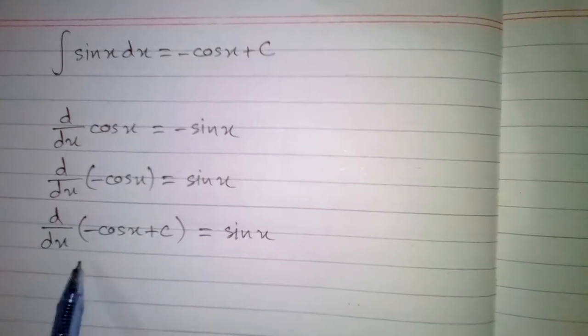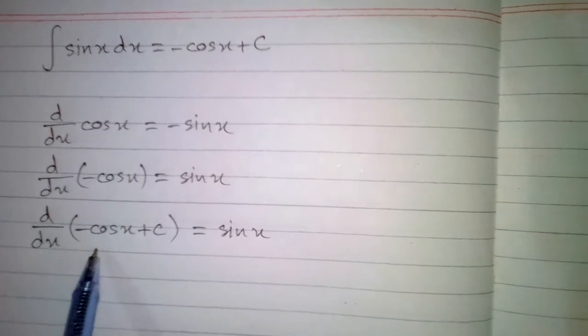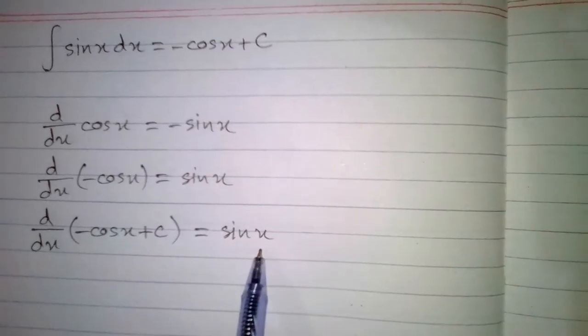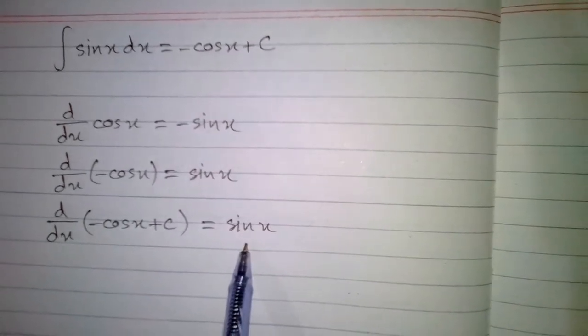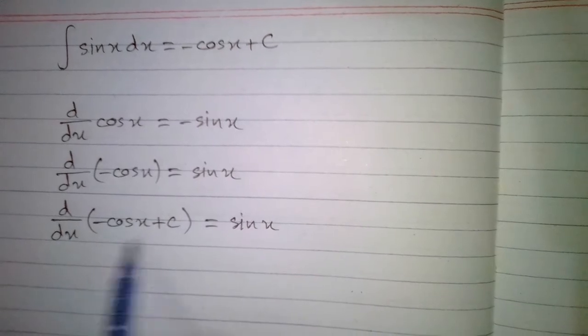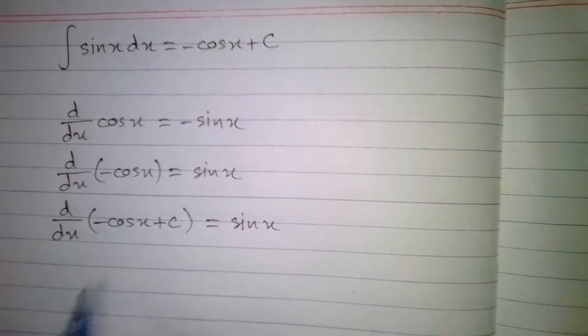So if the derivative of -cos(x) + C is sin(x), then the integral of sin(x) is -cos(x) + C.